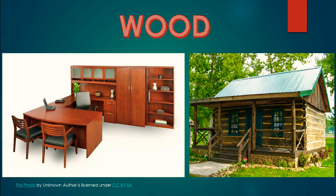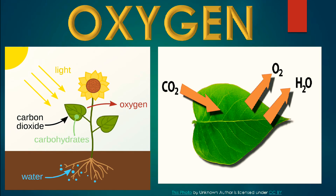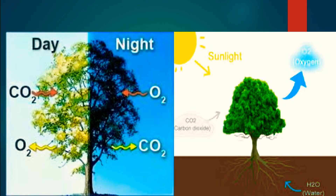We, humans, breathe with our nose. But trees use their leaves to breathe in. They give out the oxygen that we need to live, and they keep the air clean. During daytime, when the plants prepare food using the sunlight, they take in carbon dioxide and give out oxygen. But during respiration, plants take in oxygen and give out carbon dioxide. During night, as there is no sunlight, plants take in oxygen and give out carbon dioxide.